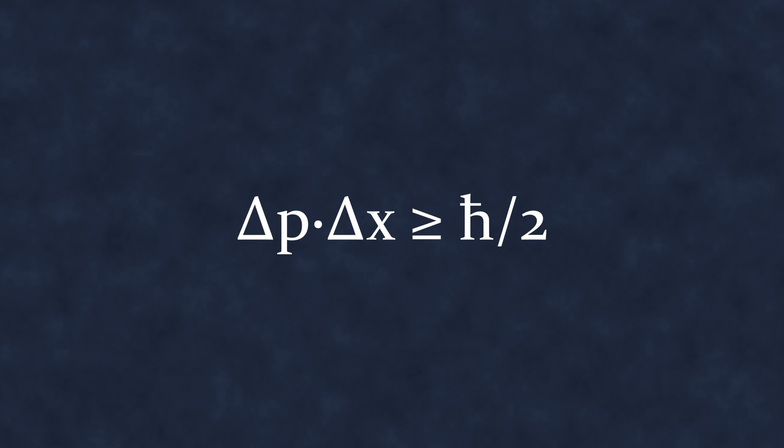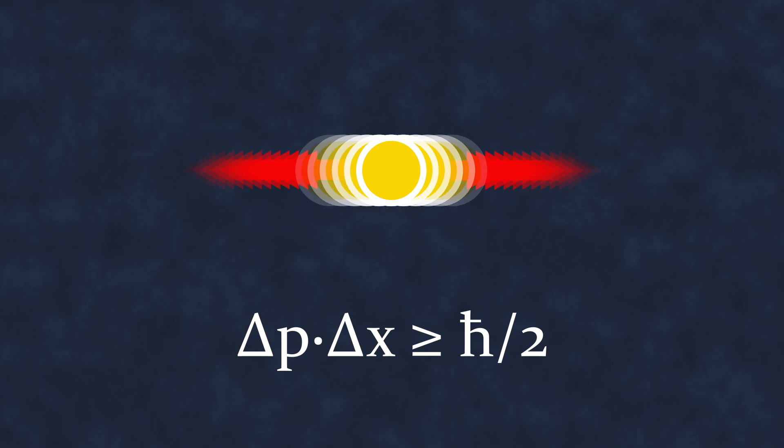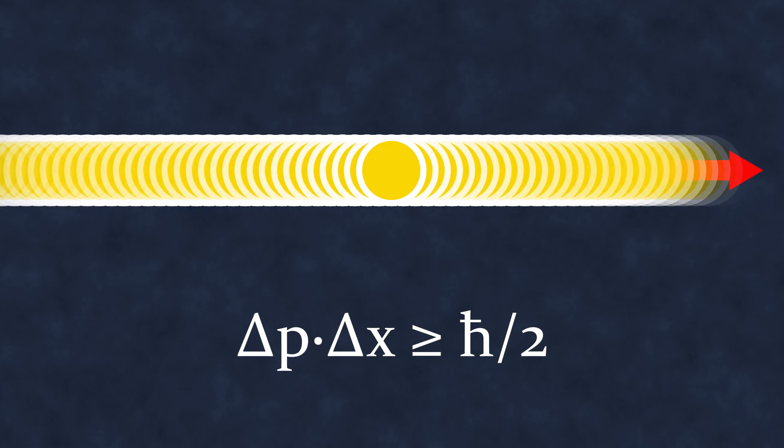Most commonly, we encounter the uncertainty principle in the context of a quantum object's momentum and position. The more precisely the momentum is defined, the less certain its position is. If we could determine a particle's momentum exactly, its position would become completely uncertain and vice versa.